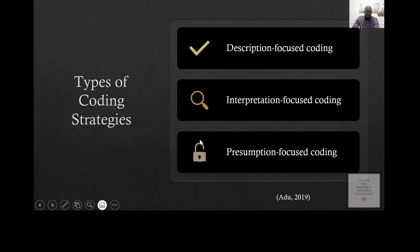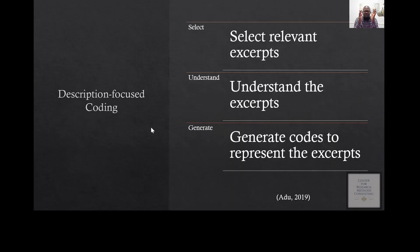Back to coding strategies — there are three main types: description-focused coding, interpretation-focused coding, and presumption-focused coding. Let's start with description. Think about it this way: with description, you are describing what you see in the data. You go through the data, identify significant information — anything that can help address your research question — and then ask yourself: what is this statement saying?